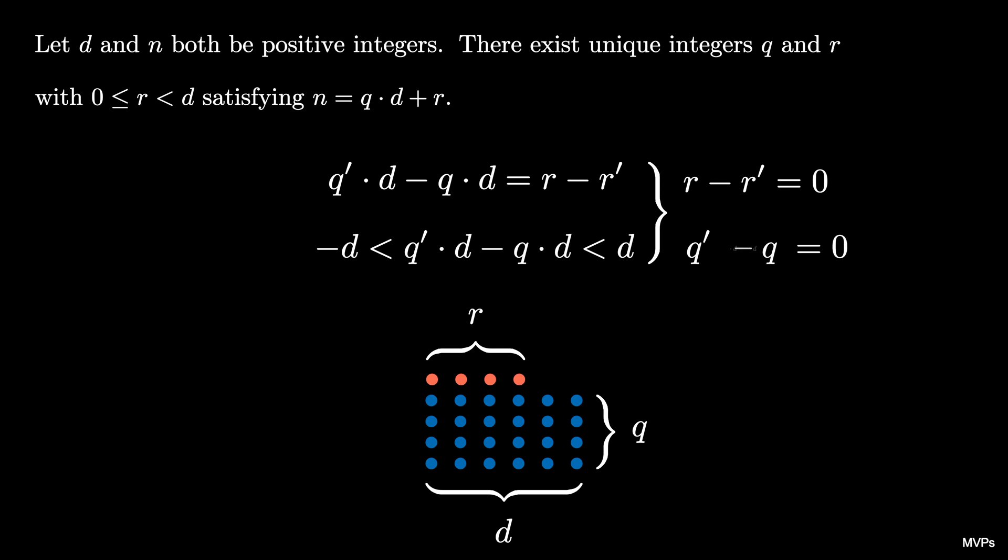Dividing the second equality by d which is non-zero shows us that q prime minus q is 0 and r minus r prime is 0. Therefore r must be equal to r prime and q must be equal to q prime.